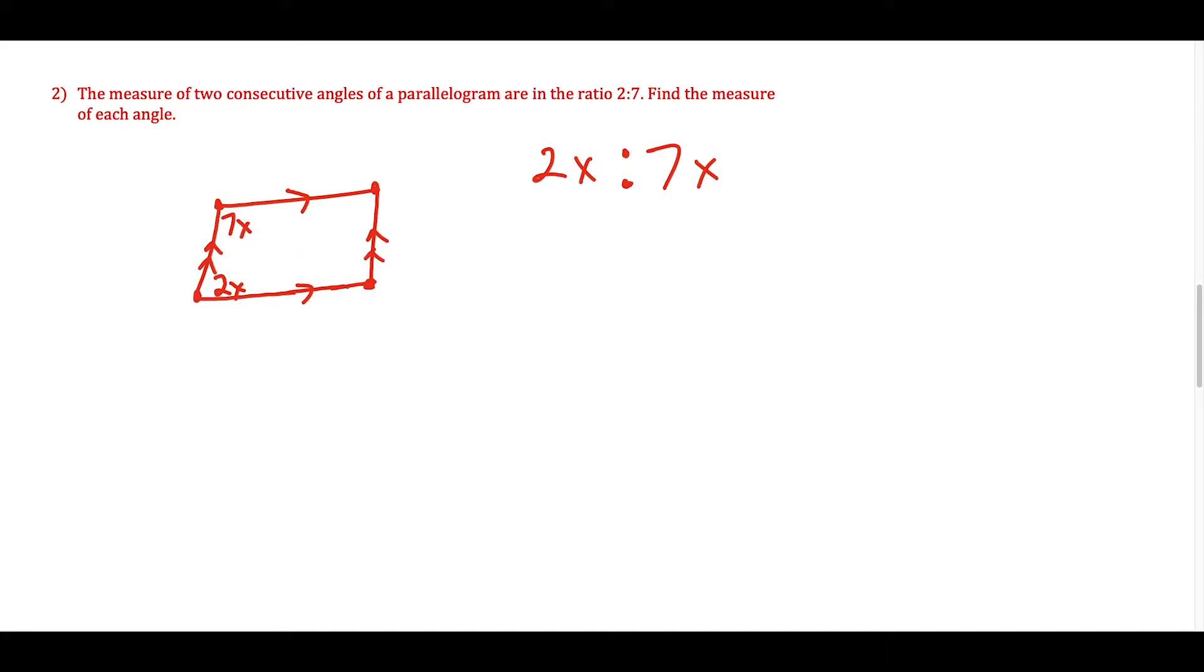This one looks like the smaller angle, so I'll call this one 2X, and the one right next to it I'll call 7X. I could have labeled this one 7X as well, because opposite angles of a parallelogram are congruent. What we want to do from here is use the idea that two consecutive angles of a parallelogram are supplementary, meaning when I add them together, they add up to 180. So that allows me to do 2X plus 7X equals 180.